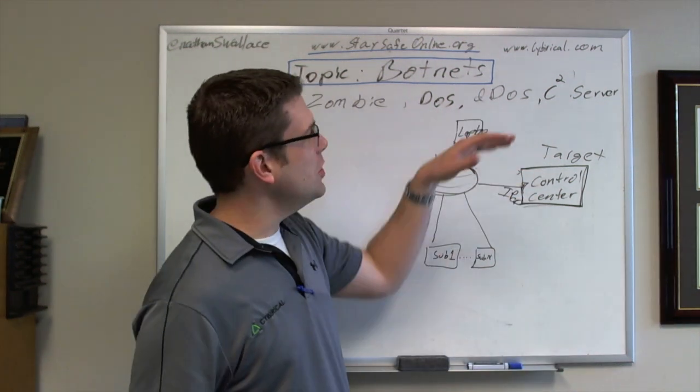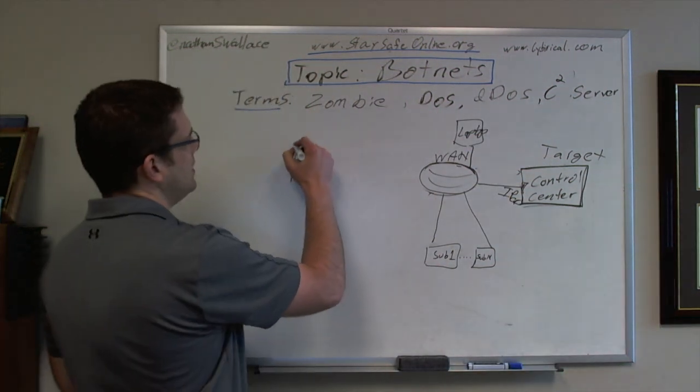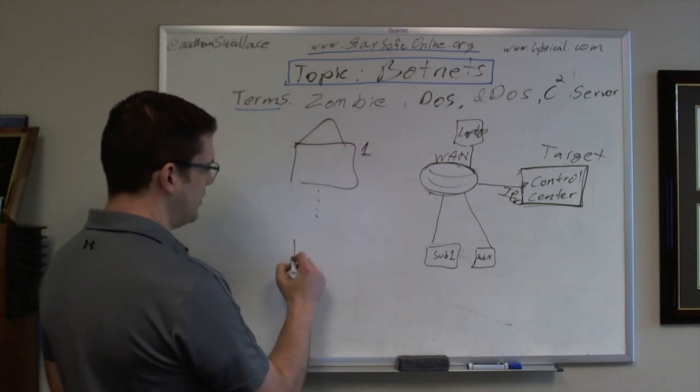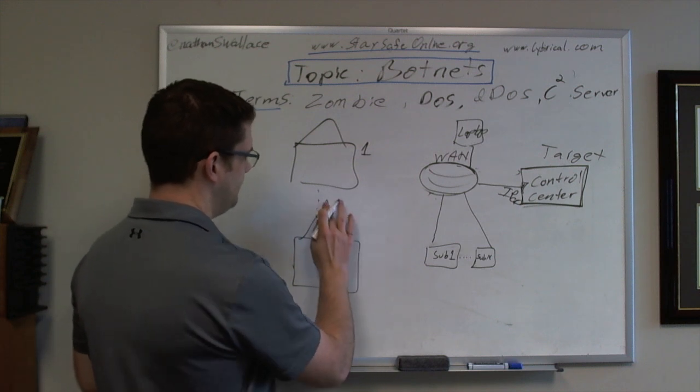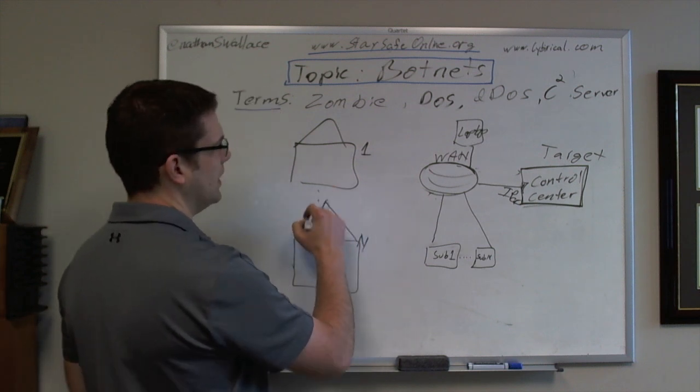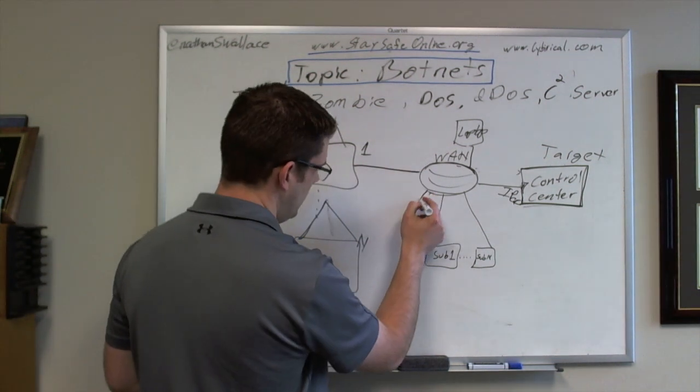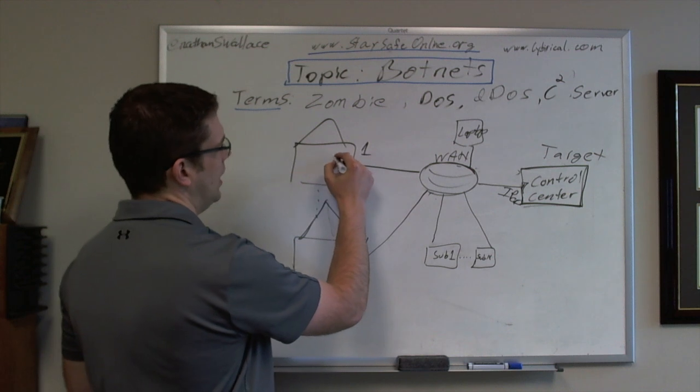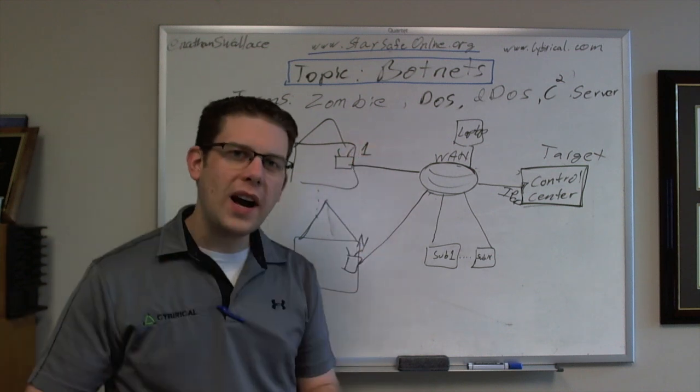So laptop - this is a single thing, this is what's called a denial of service. Well, distributed denial of service - let's say we have these houses, house one all the way out to some house N. These guys are connected to the internet, and we have our home routers.